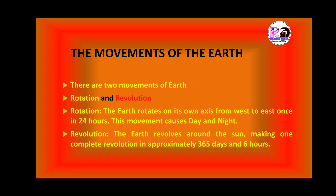Here we can differentiate between rotation and revolution. In rotation, the earth rotates on its own axis and it takes 24 hours, causing day and night. In revolution, it revolves around the sun and it takes 365 days and 6 hours, causing seasonal change.